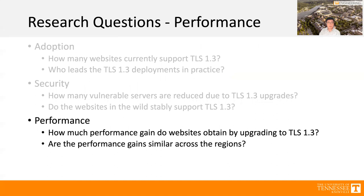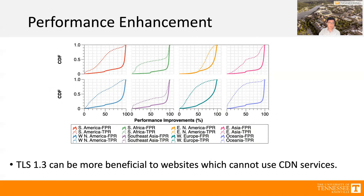The last question is performance. We measured the performance gains from eight different regions. We found that TLS 1.3 can be beneficial to websites that cannot use CDN services — meaning people living far from CDNs and cloud services also obtain performance gains from TLS 1.3.